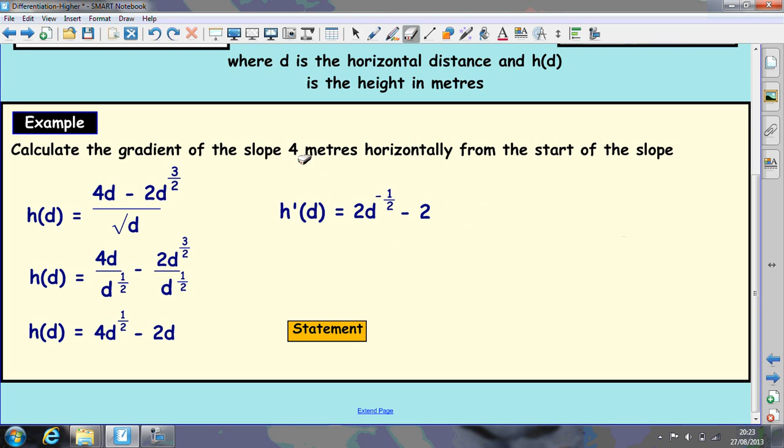At this point we can't substitute the 4 in yet. We need to change that power into a positive power and also a root. So take it down below and make it a square root. Now we can substitute the 4 in.